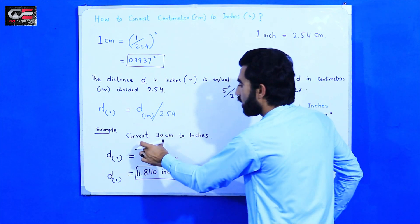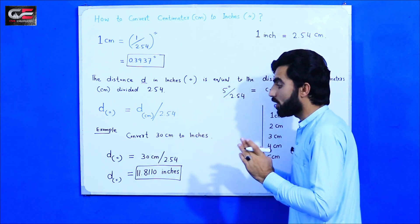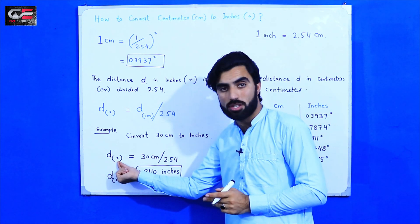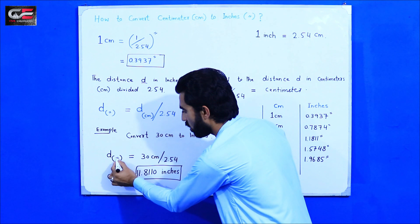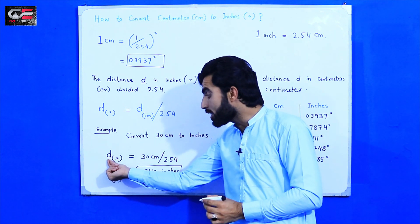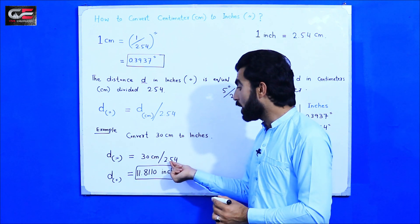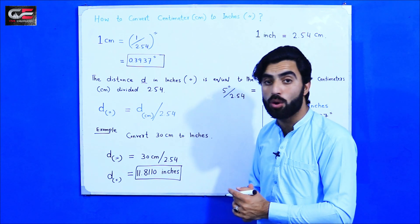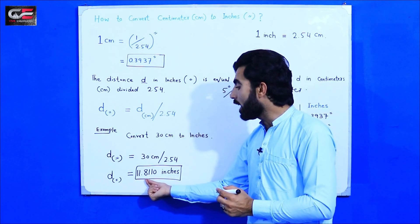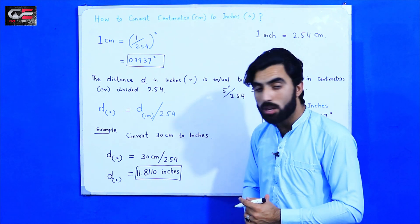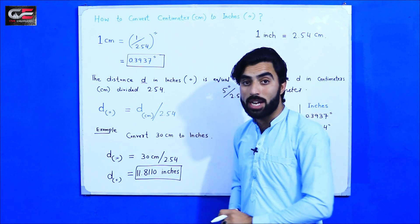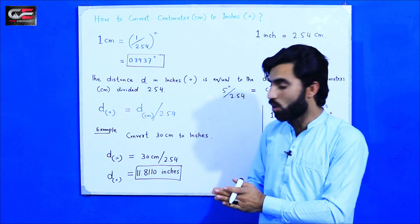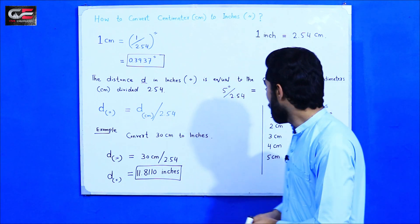For example, convert 30 centimeters to inches. You need the distance in inches — that's the double-quote symbol. So it equals 30 divided by 2.54. Using a calculator, 30 divided by 2.54 gives us 11.811 inches.